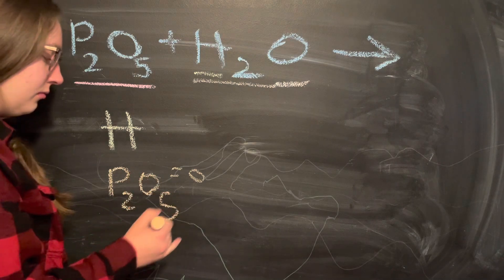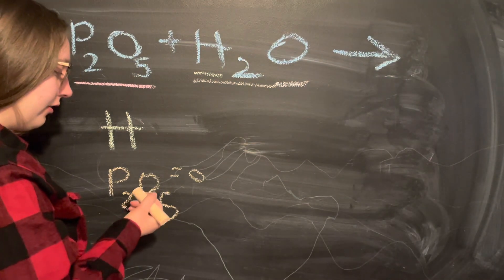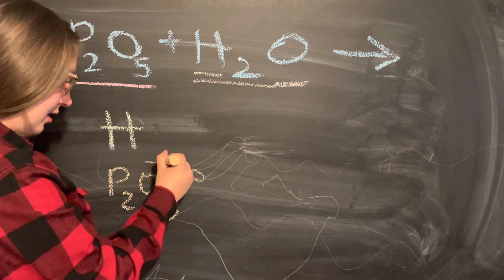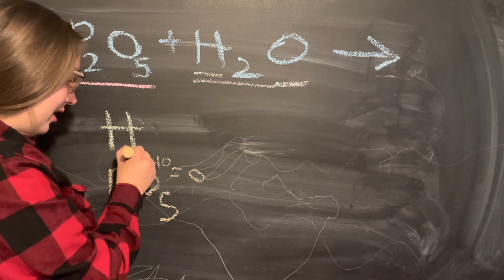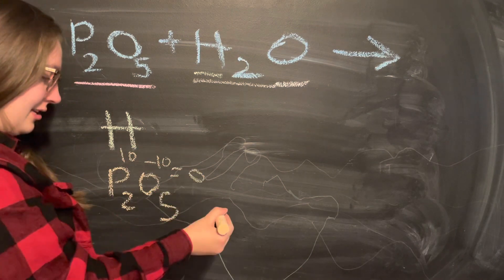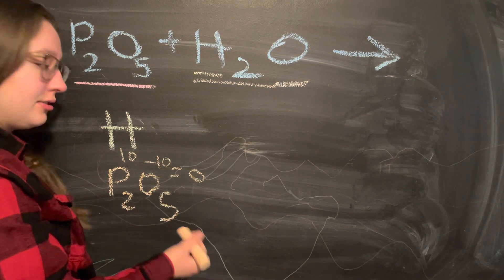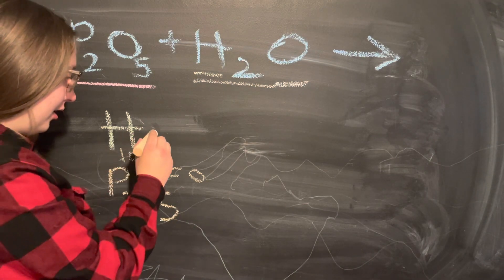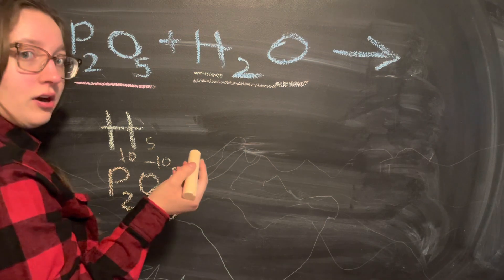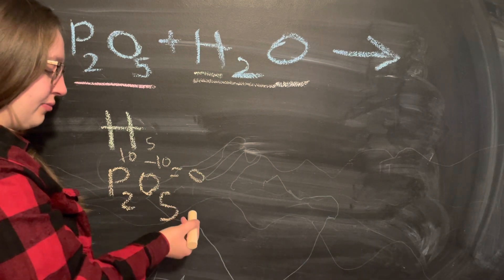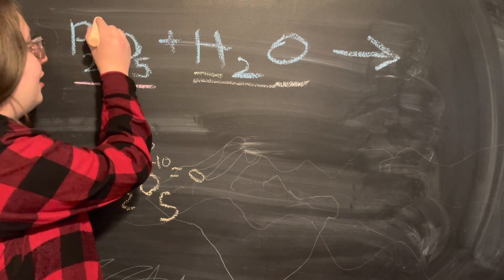We look for the charge of our original phosphorus because we need to keep it the same. Here's our original non-metal oxide, and remember, the charges always have to equal zero. The charge of oxygen is negative two, and there are five oxygens, so there's a negative ten. So the phosphorus total needs to be positive ten. But there are two phosphorus atoms, so each phosphorus has a charge of positive five, because five times two is ten — just like each oxygen is negative two and negative two times five oxygens equals negative ten. So our original phosphorus has a charge of positive five.